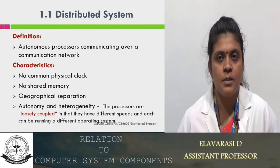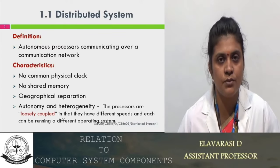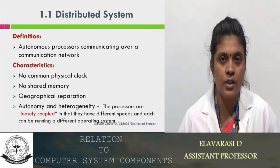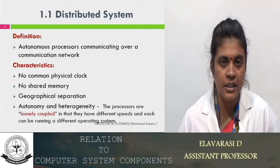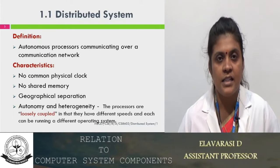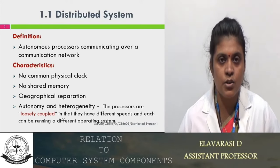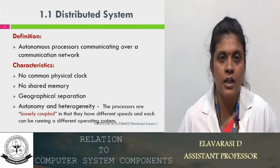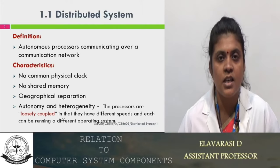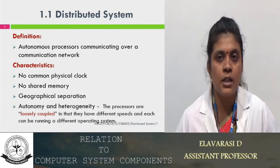Let us go for the definition: the autonomous processes which are communicating over a communication network. From the word 'autonomous' you can identify that it is an independent processor, and the independent processor is communicating over a communication network — either through a LAN or through a WAN. The systems which are placed in various geographical locations are able to communicate with each other through a communication network.